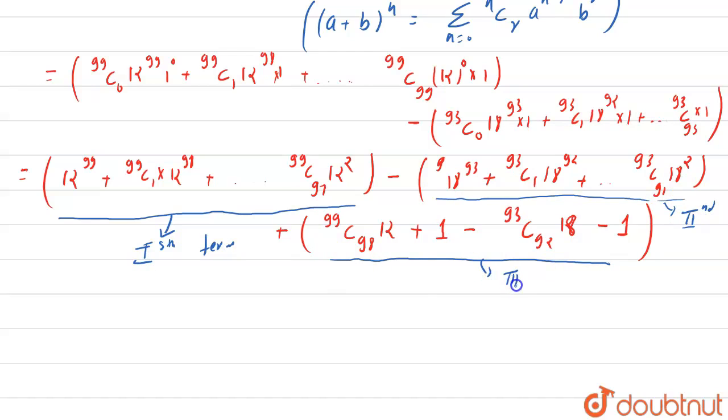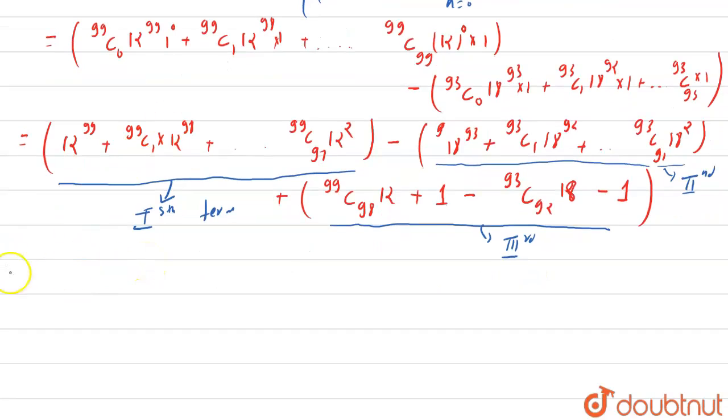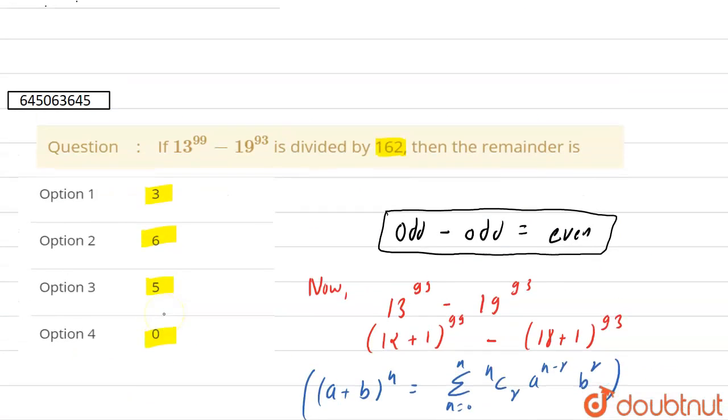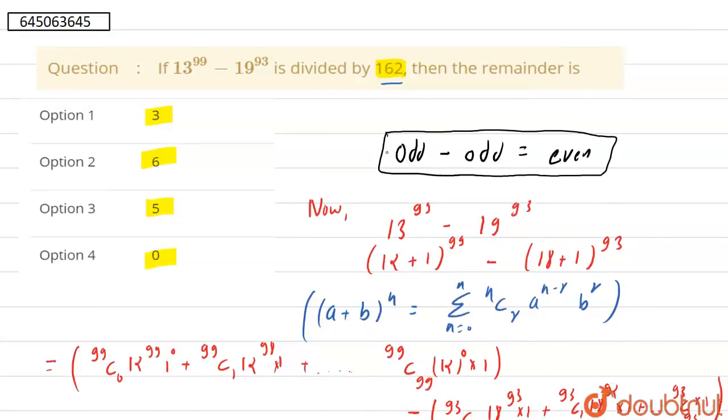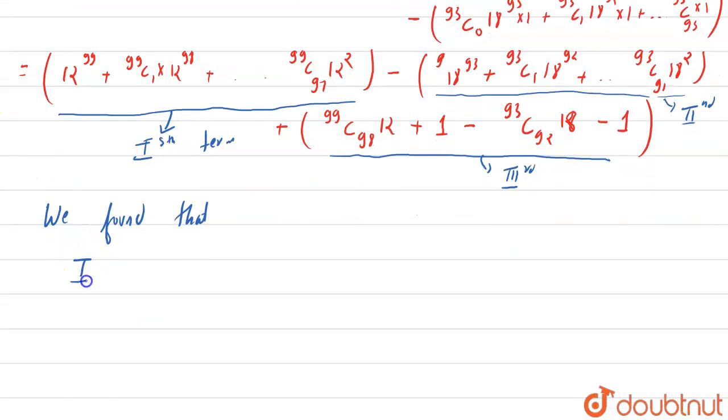So now what we found, if we write, so you can see that this is divisible by 162. So we can see that we have 12 power 2, so first term. So we can write first term. There you can see 12 power 2 is common in all, so this is divisible by 162.